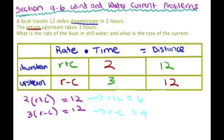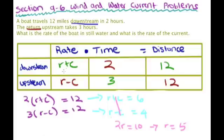Now it's really easy, because we have opposites. We can use the addition method — we cancel out the c's, and we get 2r is equal to 10. So r is equal to 5. As we mentioned earlier, r is the rate of the boat in still water. So if there were no current at all, the boat would be going at 5 miles per hour.